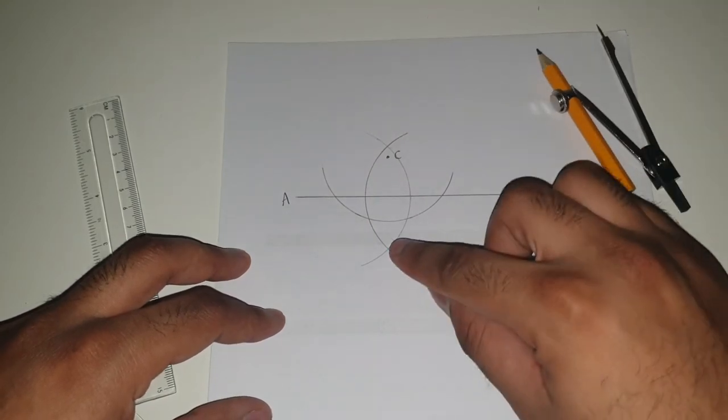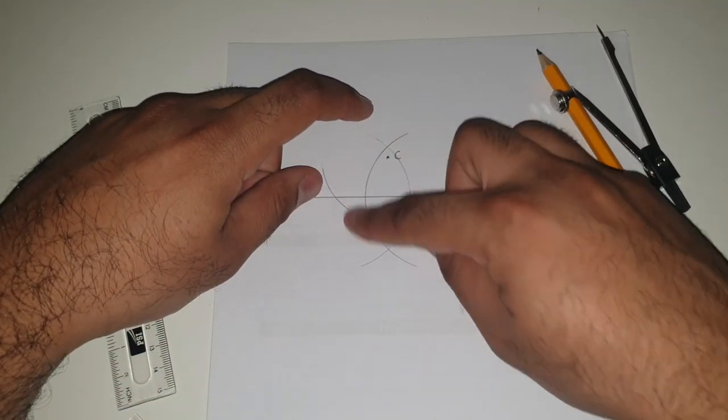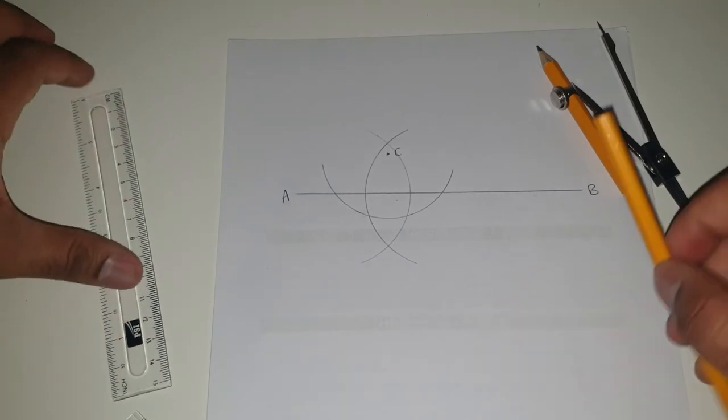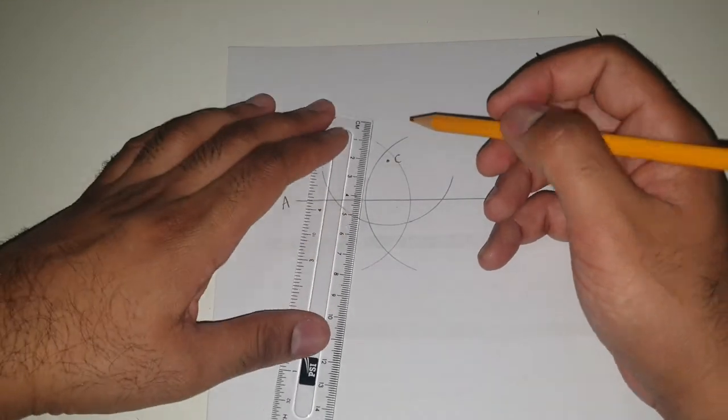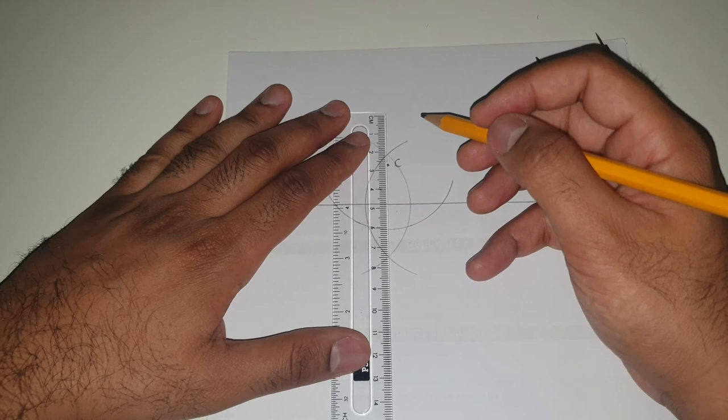What you'll see is that the two points where these part circles intersect are at either end of point C.